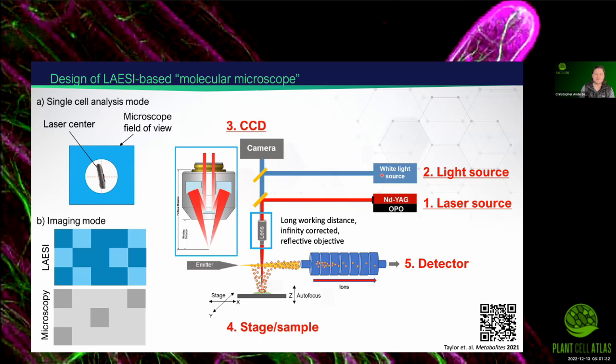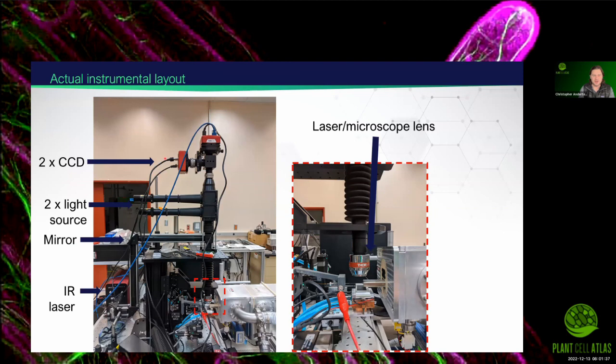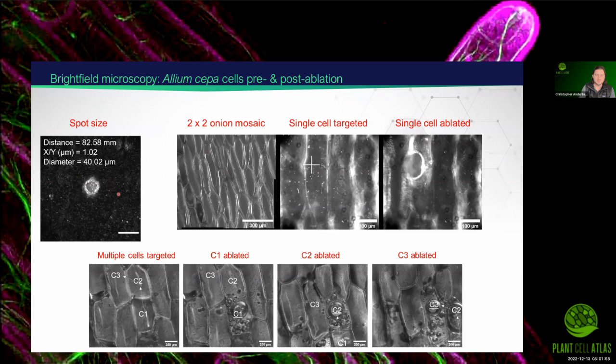This is what the actual instrument looks like in its current state, though the data I'm going to show only had one bright field microscope on, so we could visualize the cell structure and then target it. Once we focus the laser, this is quite powerful — we can get it down to 30 microns with this optic. We can change optics and might have to adjust some other things for the instrument configuration, but we can image the sample and then target individual cells.